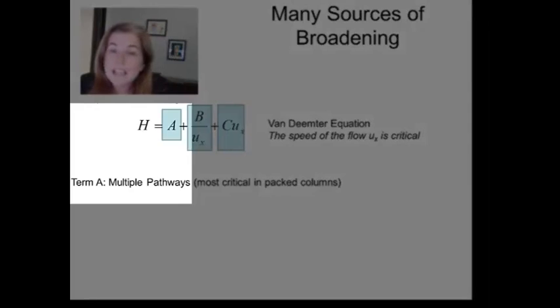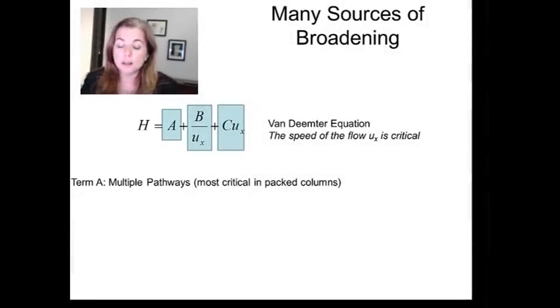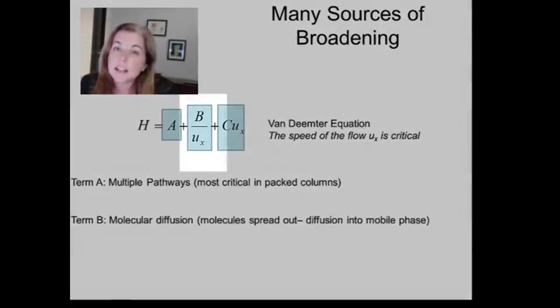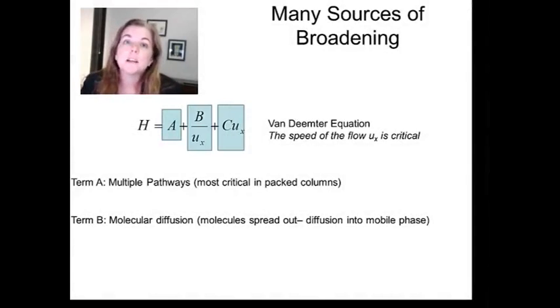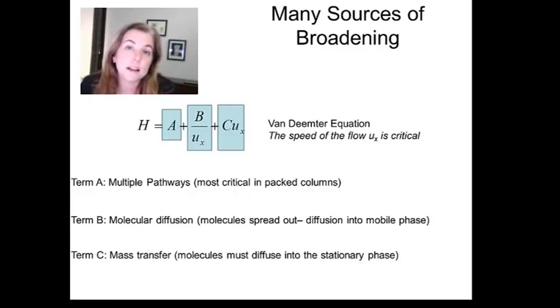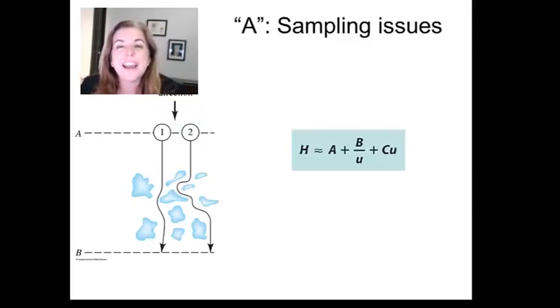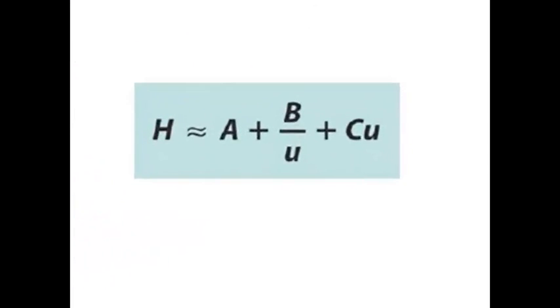Term A is called multiple pathways. It's going to be most critical in packed columns, so columns that don't have an open interior, but are full of porous media. In this equation then, A is a constant, and it just is an offset that's kind of the very best case. If you have the optimal flow rate, the lowest plate height you could achieve.